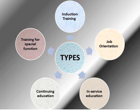The fifth type is training for special functions. This involves education directed at meeting job-related learning needs of employees or nurses. For example, if a nurse in an ICU needs to perform arterial cannulation but is not aware of the procedure, a supervisor will conduct a training development program to bring them up to the required skill level.